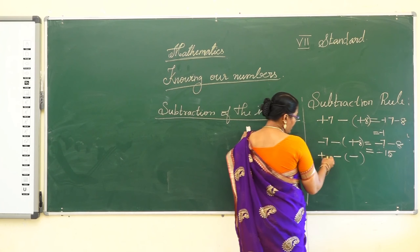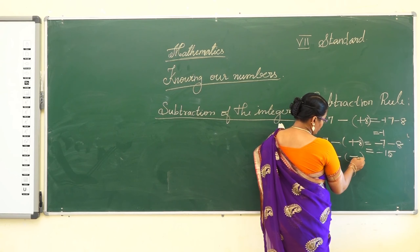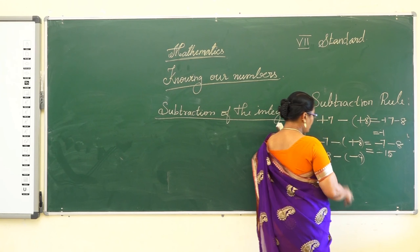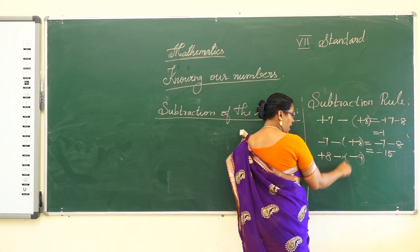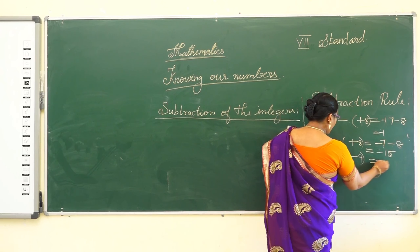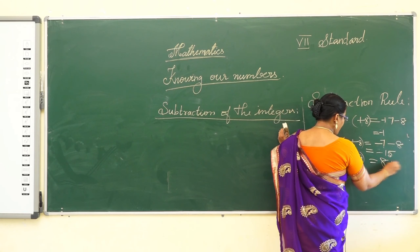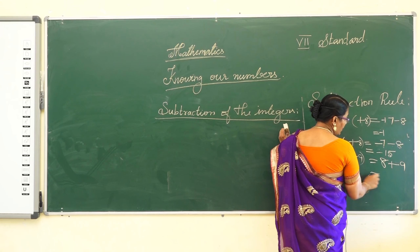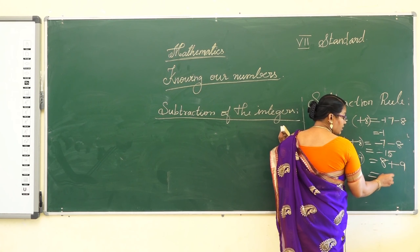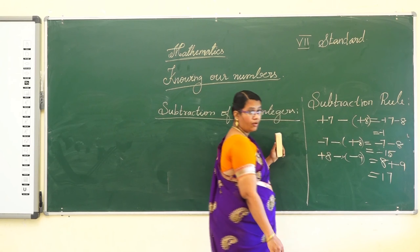Next example: 8 minus (-9). Here minus into minus gives plus, so we have 8 + 9 = 17. The answer is 17.